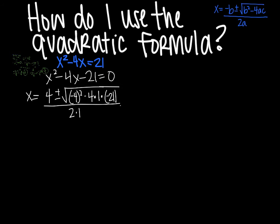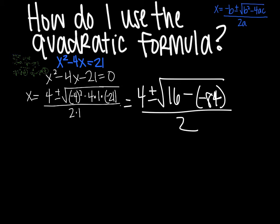And then very carefully, very slowly, we are going to simplify this. And that will be 4 plus or minus the square root of 16 minus, and then 4 times 1 is 4, 4 times negative 21 gives me negative 84, all divided by 2.